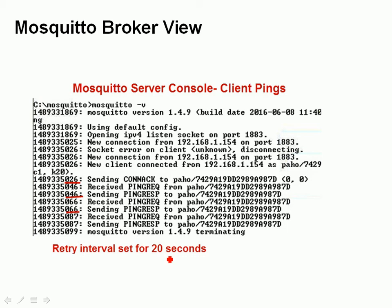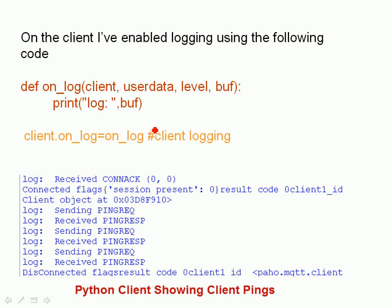On the client side, I've enabled logging using the following bit of code, and then you set the callback using this bit of code here, so that lets us see what's going on. You can see a very similar thing here — we see the client sending the ping request and it receiving the ping response from the server.